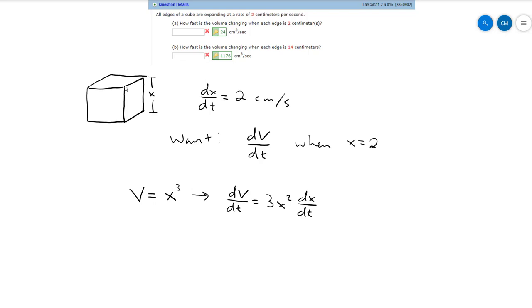So the next step is just to plug in the quantities that we want. So we want dv/dt when x is equal to 2. So we just plug in 2 for x and then we plug in the dx/dt is also 2.